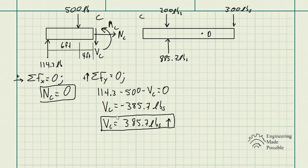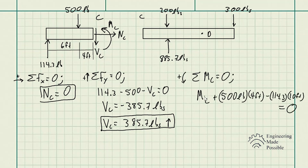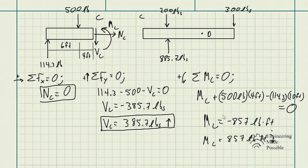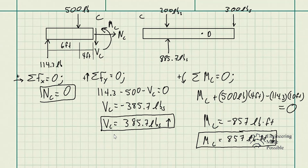Now applying the sum of moments with respect to point C: MC plus 500 times 4 feet minus 114.3 times 10 feet equals 0. Solving gives MC equal to negative 857 pound-feet, which tells us the moment is actually clockwise. With these internal forces — the bending moment and shear force — we can determine whether the beam can sustain the load or will fail, which is covered in strengths of materials.